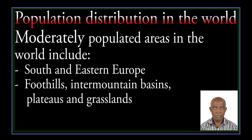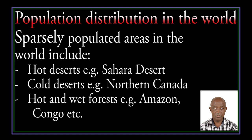Moderately populated areas in the world include South and Eastern Europe, foothills, intermountain basins, plateaus, and grasslands. Sparsely populated areas in the world include hot deserts, for example the Sahara Desert, and hot wet forests, for example the Amazon, Congo, and others.